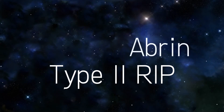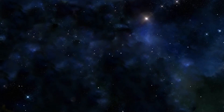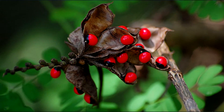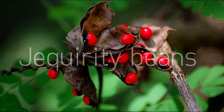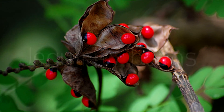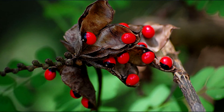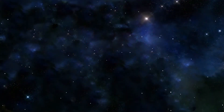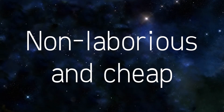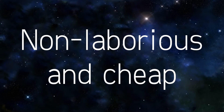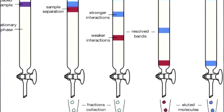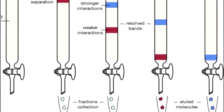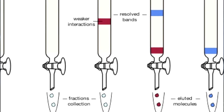Using this background knowledge, we are going to take a brief look at a specific type 2 RIP known as Abrin. Abrin is obtained from the seeds of Abrus precatorius, also known as jequirity beans. These plants have been historically used as ornamental plants as well as children's toys. Abrin is soluble in water and can be extracted with simple aqueous extractions and chromatographic steps.